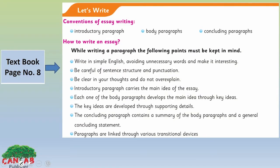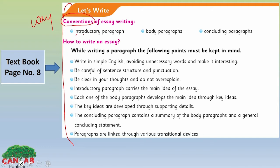Now look at page number eight in your textbook — we have a writing section here. It says: Conventions of Essay Writing. Conventions means ways; it tells you how to write an essay. It includes the introductory paragraph, body paragraphs, and concluding paragraph. While writing a paragraph, the following points must be kept in mind: write in simple English, avoiding unnecessary words, and make it interesting. Avoiding unnecessary words means things which are not important — no need to include them in an essay.